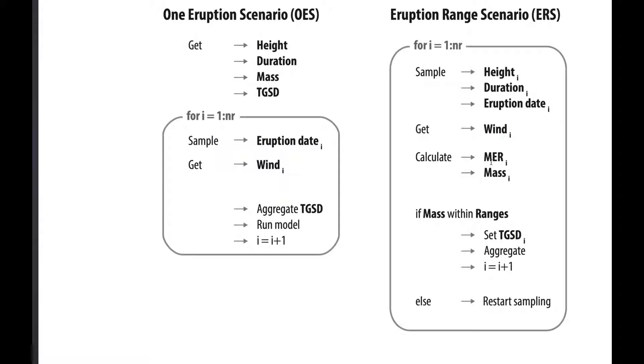In order to get realistic sampling of eruption source parameters, for example I have a height on one side and a mass on the other side and I want to avoid sampling a very low plume height and at the same time a very high mass. We implement just a simple test. So the mass is indirectly sampled from the plume height and the duration and eruption date, and that is how it works.